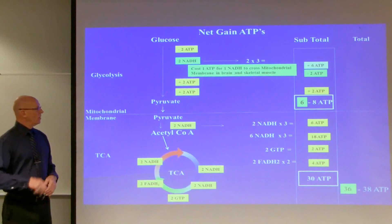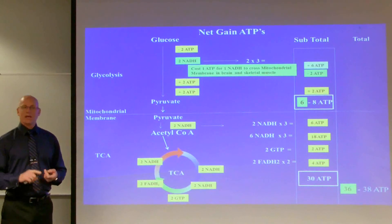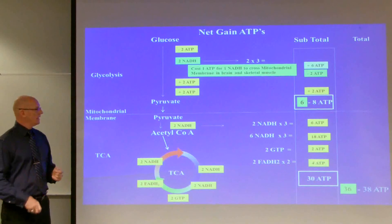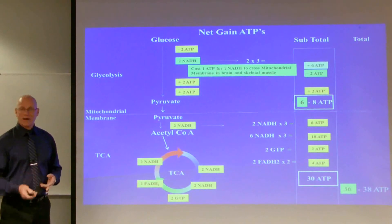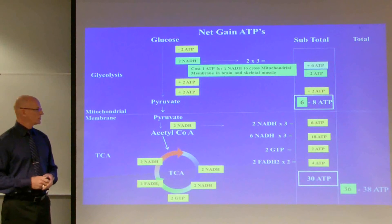And the total ATPs for glycolysis and the citric acid cycle is 36 to 38, and the discrepancy here is because of these two that will cost us to get NADH across the mitochondria in some of the tissues.